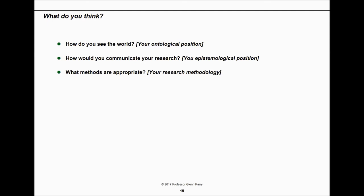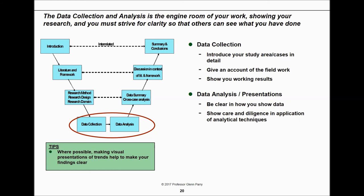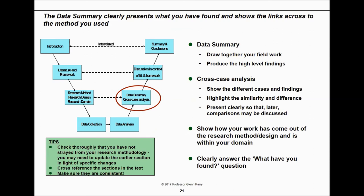To summarize: how do you see the world? That's your ontological position. How would you communicate your research? That's your epistemological position. And what methods are appropriate? That's your methodology. Having worked through all of that and written it down, you're into the engine room — going out and collecting data, analyzing it. Where possible, I always like to see visual presentations of the work showing trends to make findings clear.